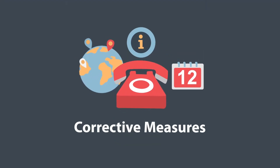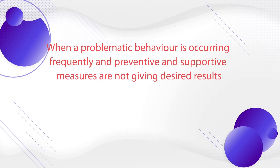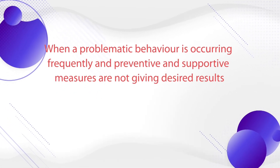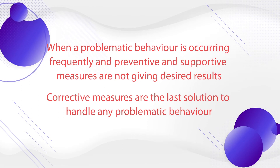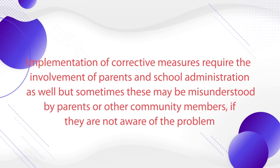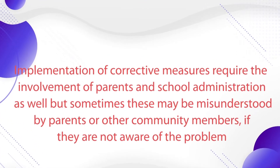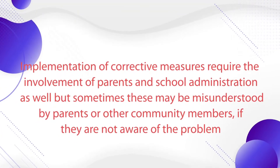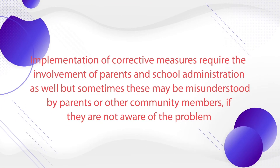Then come corrective measures. Corrective measures are used when a problematic behavior is occurring frequently and preventive and supportive measures are not giving desired results — they are the last solution to handle any problematic behavior. Implementation of corrective measures may require involvement of parents and school administration. If parents are not informed and misunderstand your actions, or if school administration is unaware and parents raise a concern, that creates a problem. Making all stakeholders aware is an important precondition for applying any corrective measure.